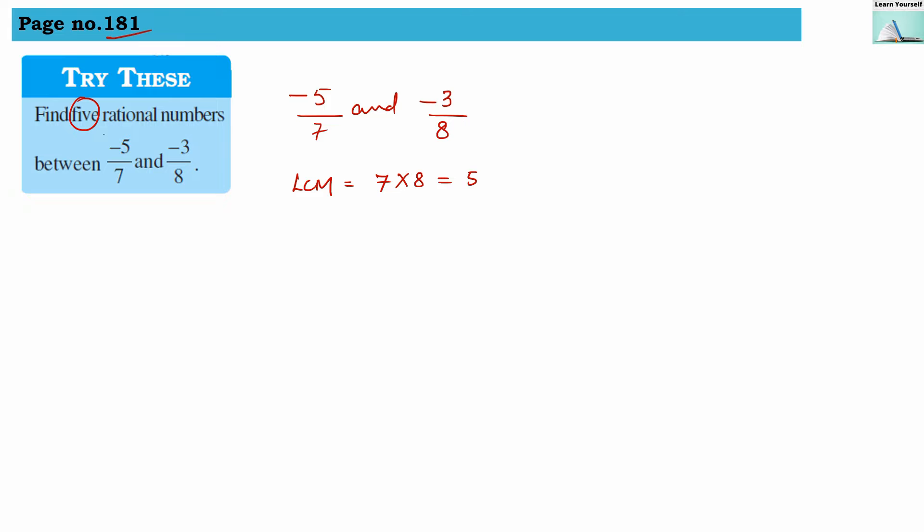Let us convert these denominators in terms of 56. So 7 into 8 and minus 5 into 8, and we will get here minus 3 into 7 divided by 8 into 7. So here we will get minus 40 divided by 56 and minus 21 divided by 56.